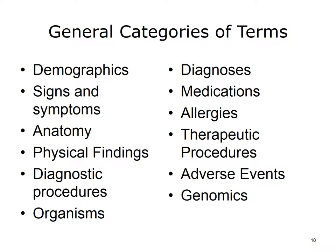It is useful to assign data elements to classes or categories. Most systems would use categories similar to these: demographics, signs and symptoms, anatomy, physical findings, diagnostic procedures, organisms, diagnoses, medications, allergies, therapeutic procedures, adverse events, and genomics. In some cases, a coding system will only include terms in some of these categories. If we depend on just one coding system, we have data items we cannot code. Of course, everything we record does not fit into these categories — then what do we do?